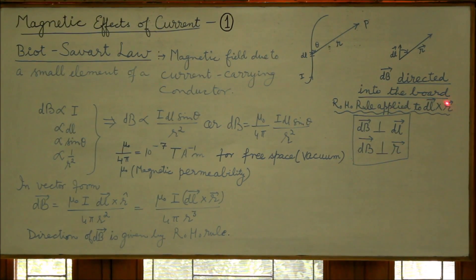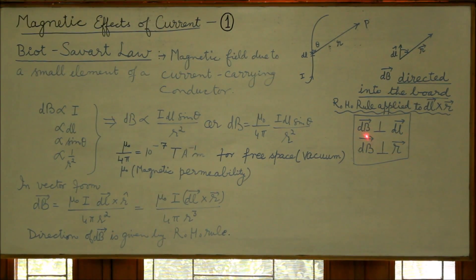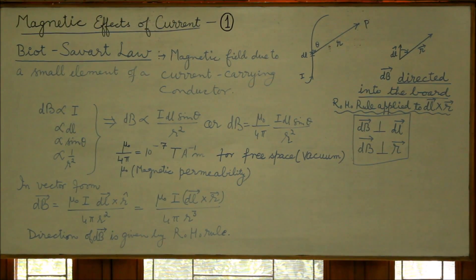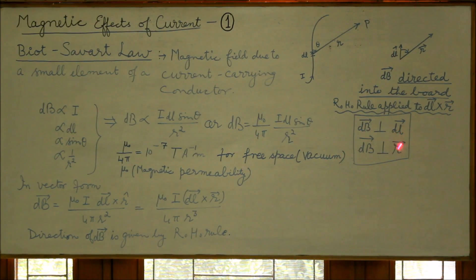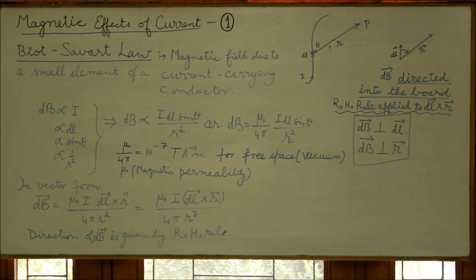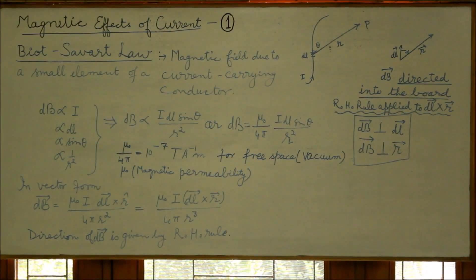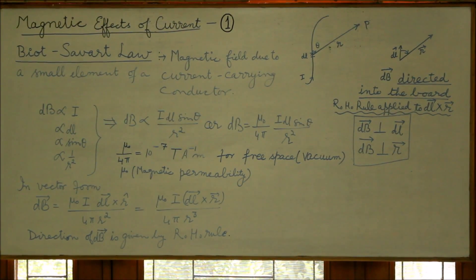Therefore, the direction of the magnetic field due to the element at point P is directed into the whiteboard. Remember: dB is perpendicular to the plane of dl and r, so dB is perpendicular to dl and also perpendicular to r, giving two pairs of perpendicular vectors. The Biot-Savart law can be further used to find the magnetic field due to symmetric current-carrying elements, as we will study in the next part of this video.